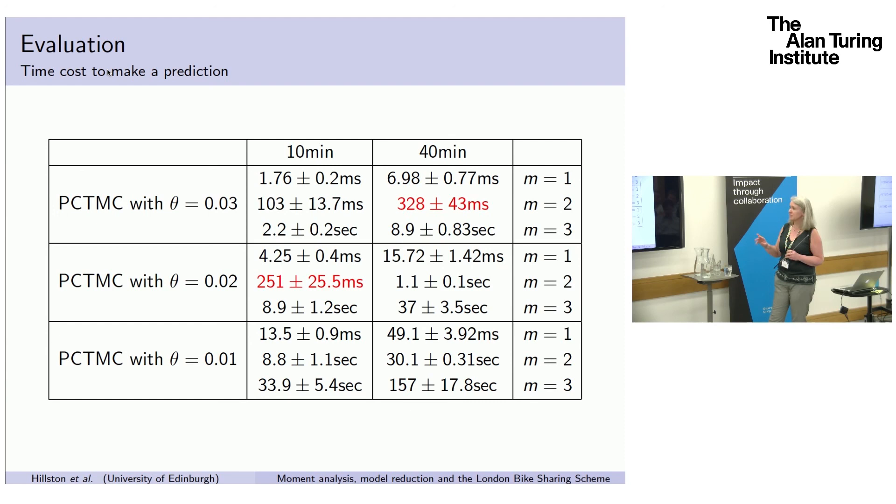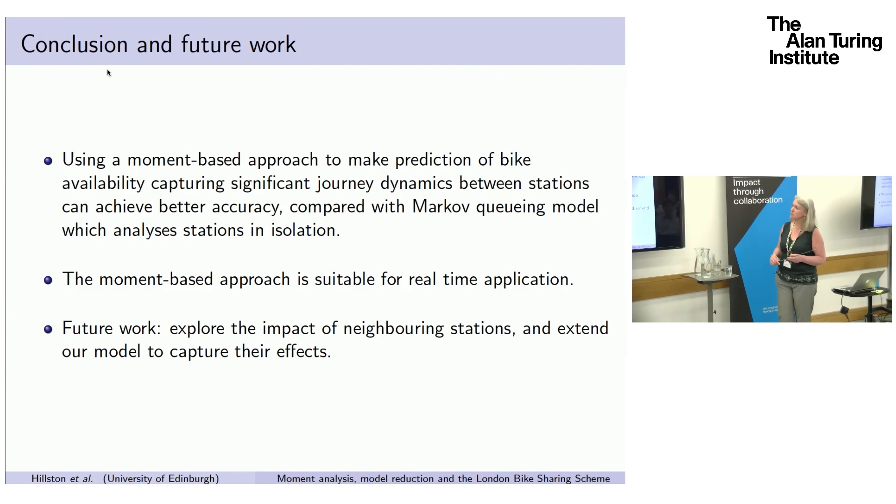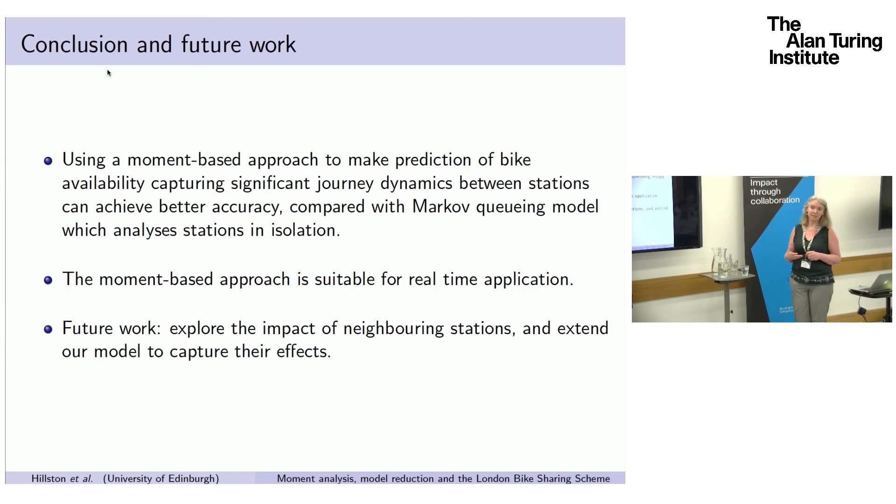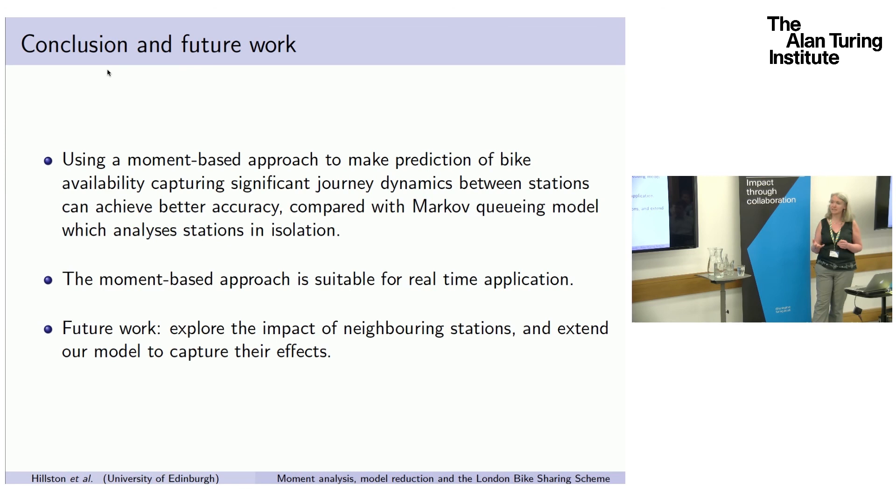So that was our story. We've been using this moment-based approach to make predictions of bike availability. We wanted to capture the significant journey dynamics. Maybe we're pruning too many and that's why we don't see very much difference from the model that assumes complete independence. But we're going to keep investigating that. The moment-based approach is suitable for real-time application when we prune. But maybe we're pruning too much. And we also want to explore the impact of neighboring stations because what we don't explicitly represent at the moment is the fact that if you go along to King's Cross 1 and there's no bicycle, you will probably increase the demand at King's Cross 2 because you'll walk around the corner and take a bike from there. So that's it. Thank you very much for your attention.